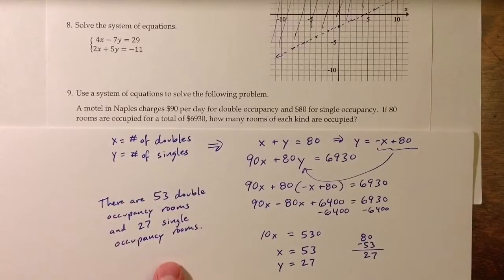So for a concluding sentence, we can say there are 53 double occupancy rooms and 27 single occupancy rooms.